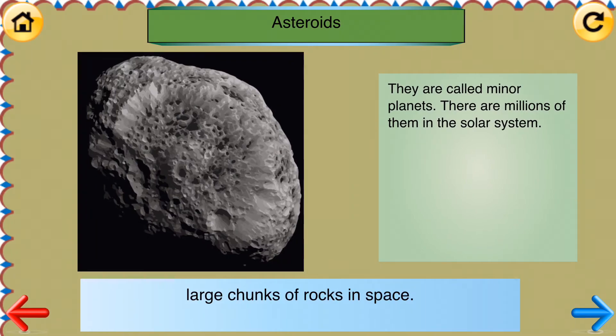Asteroids. Large chunks of rocks in space. They are called minor planets. There are millions of them in the solar system.